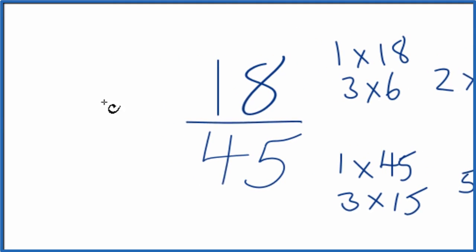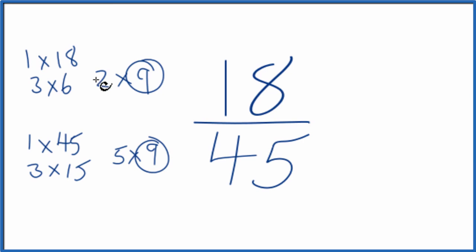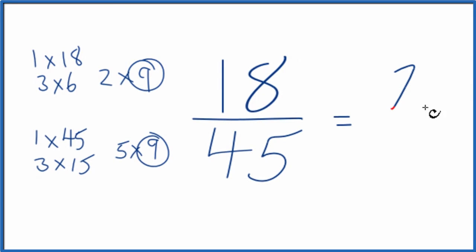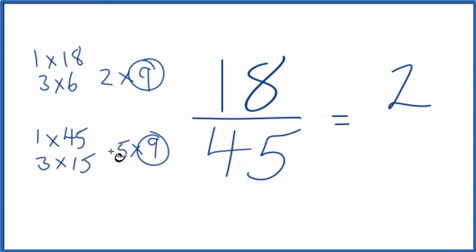Let's move these over here. So 18 divided by 9, that's 2. And then 45 divided by 9 is 5.